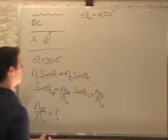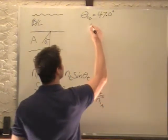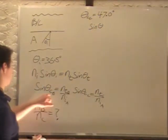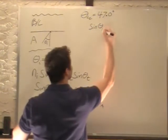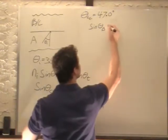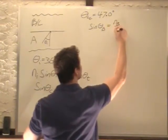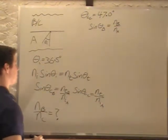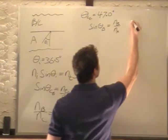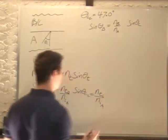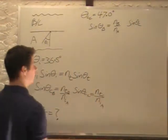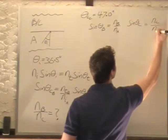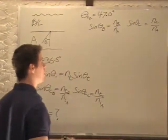So basically we have sin(theta_B) equals n_B over n_A. This is my critical formula. And sin(theta_C) equals n_C over n_A. What's common in these two cases? Well, n_A is.